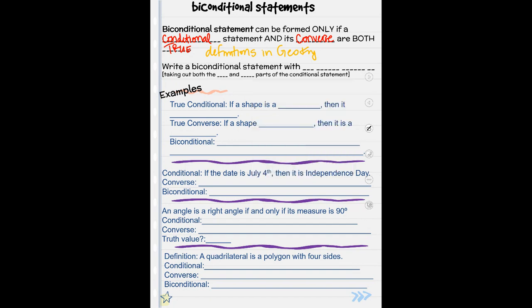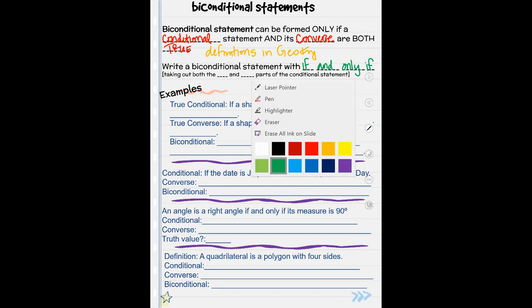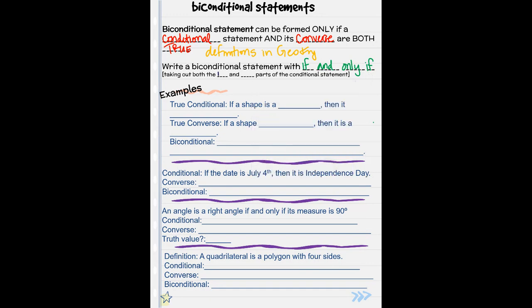If both of those statements, conditional and converse, are both true, then we can write a biconditional statement with the words if and only if. That means we're going to take out the beginning if and the middle then, and we're going to insert our if and only if in the middle of our two statements.